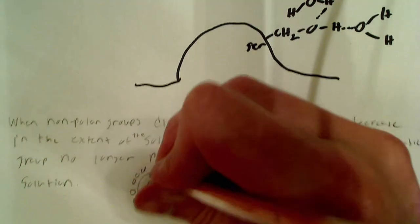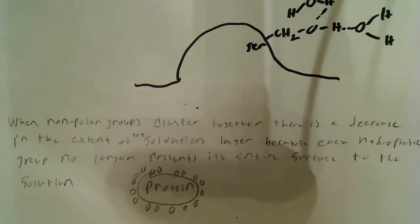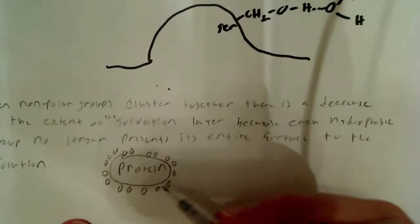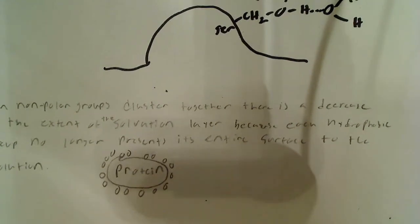Now water can interact favorably with hydrophilic residues but it cannot interact favorably with hydrophobic residues and it actually causes the salvation layer to be larger. So basically what the folding does by taking the hydrophobic residues that are disrupting the salvation layer and folding them into the center of the protein, it decreases the salvation layer.